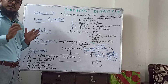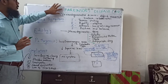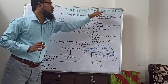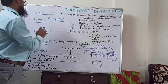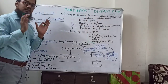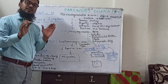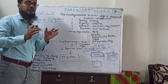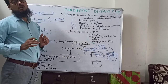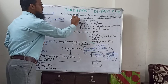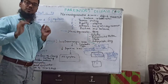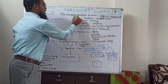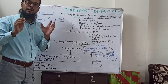Dear students, now we will discuss Parkinson's disease, also called Parkinsonism disease or PD. Parkinson's disease is a neurodegenerative disease, which mainly affects movement, balance and muscle coordination. Neurodegenerative means degeneration — loss or destruction of neuro means nerve, neurons.